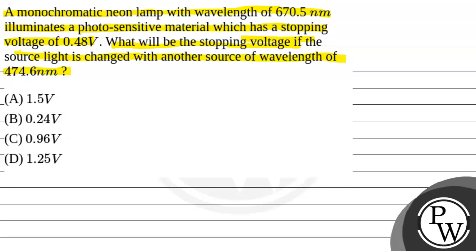First of all, we will see what will be the key concept used to solve this question. The key concept will be: KE max is given by hc by lambda plus phi, and KE max is equal to e into Vs, where Vs is the stopping potential. So, e into Vs will be equal to hc by lambda plus phi.